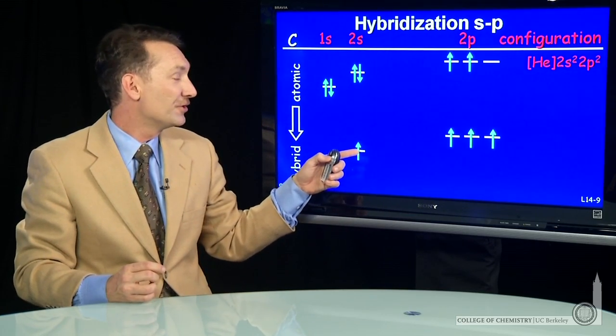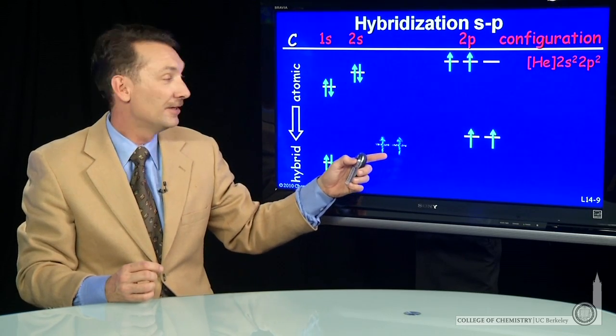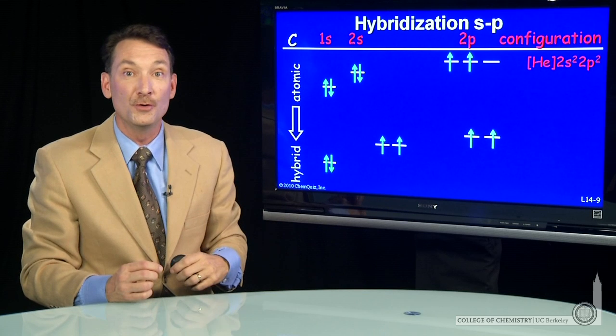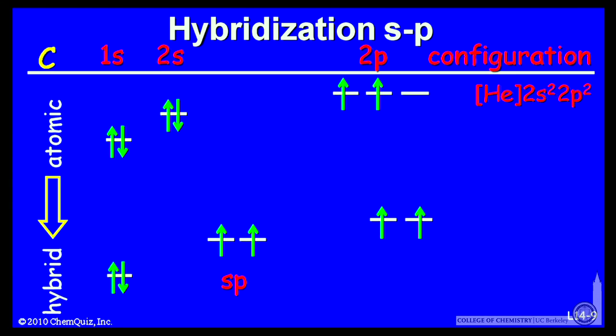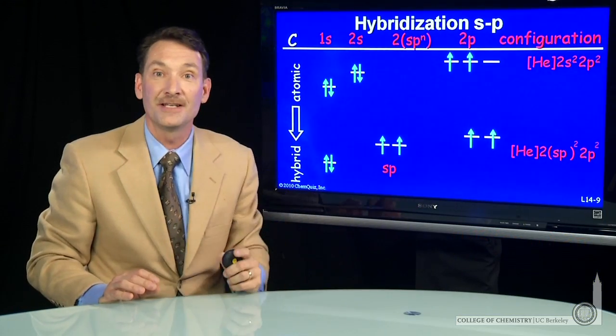When I take the 2s and the 2p to make an sp hybrid, I'll take two atomic orbitals and form two new atomic orbitals with the designation sp. So I'll have a new electronic configuration, and that new electronic configuration will be two sp. Those are sp orbitals. There'll be two electrons in the sp and two electrons left in the p.